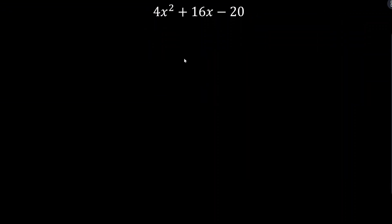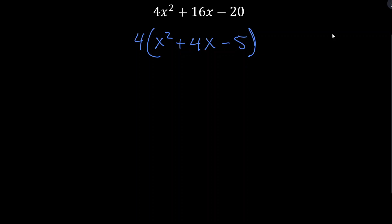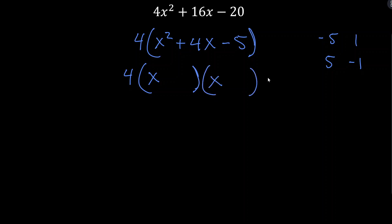One more example — same idea. We can factor out a 2, but we could also factor out a 4, which is the greatest common factor. That gives us x squared plus 4x minus 5. Since 5 is prime, we only have two possibilities: minus 5 and plus 1, or plus 5 and minus 1. They multiply to negative 5 and need to add to positive 4 — so the positive must be bigger: plus 5 and minus 1. The fully factored form is 4(x + 5)(x − 1).